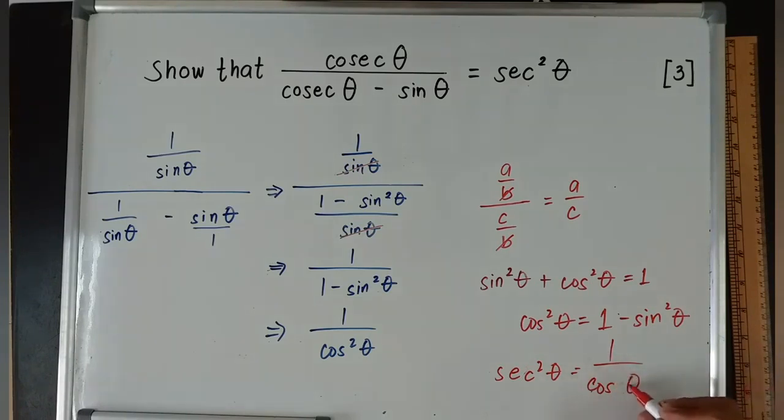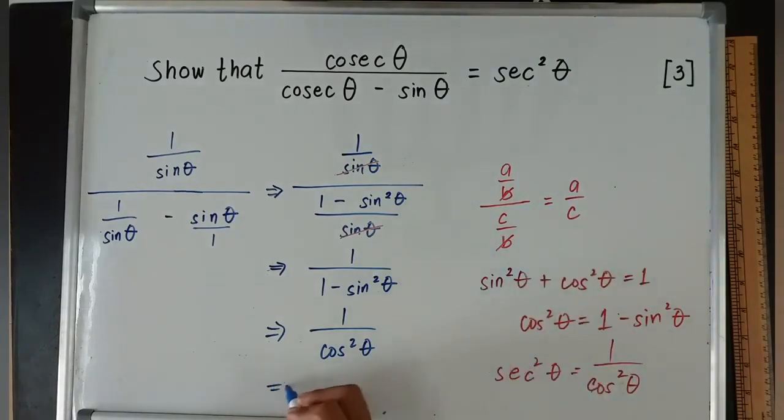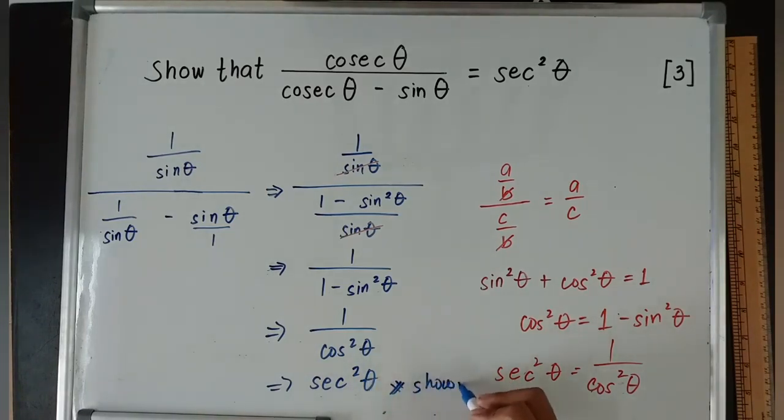1/cos² θ. If there is no square, sec θ = 1/cos θ. But if I put a square here, there must be a square here. And remember, one squared is still one. So therefore, I was able to come up with the one on the right side, making my proof complete.